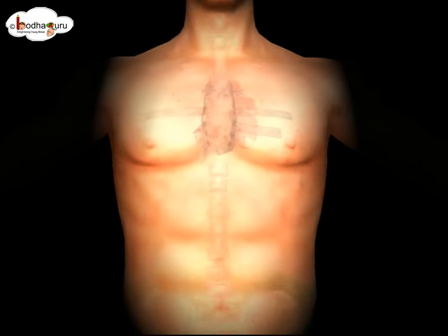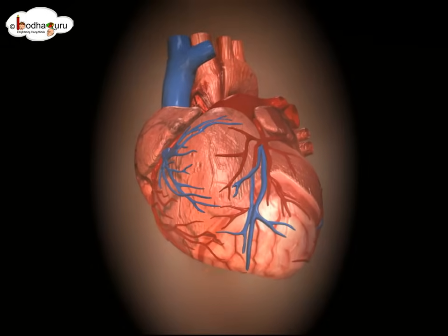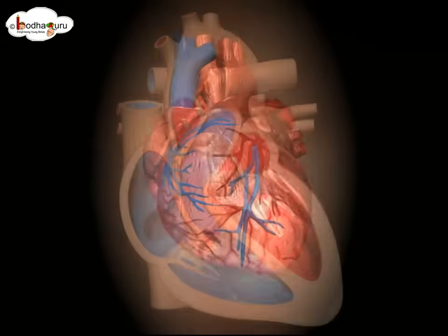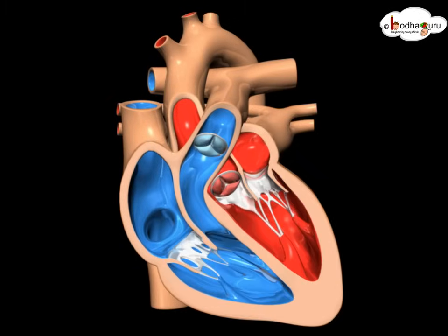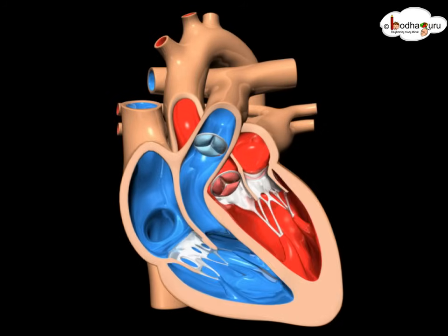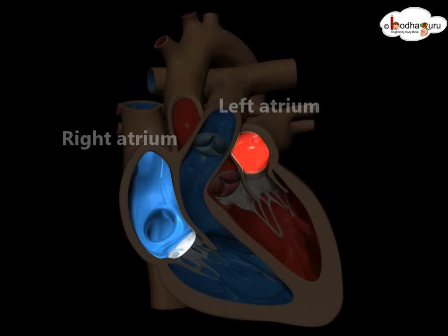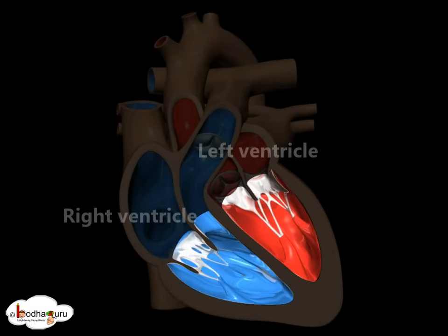Our heart is a muscular organ which is protected by the ribcage. The heart is divided into four chambers. The two upper chambers of the heart are called right atrium and left atrium, and the two lower chambers are called right ventricle and left ventricle.